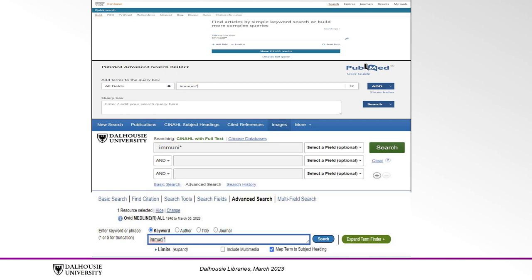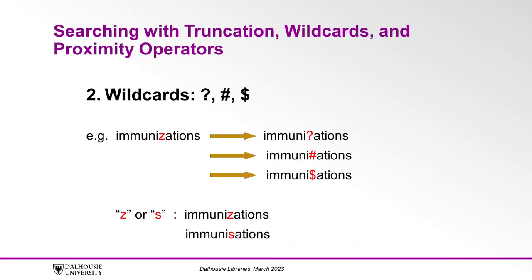Truncation works in many other databases and search tools as well. Now let's talk about wildcards and how they could apply to our example. Wildcards are used to replace a letter inside your keyword that could vary because of alternate spellings. Depending on the database, the wildcard could be a question mark, a dollar sign, or a pound or hashtag symbol.